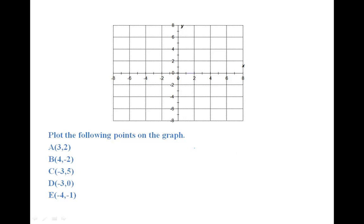Let's look at an example. Plot the following points on the graph. A, three comma two. Three is on the x-coordinate, and two is on the y. So to plot point A, go over to three on the x, and up to two on the y-axis, and label your point.